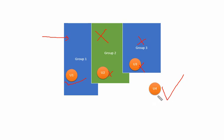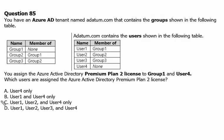User 4 has the license because it was assigned directly. So keep in mind: when we apply licenses to a group that has subgroups, the license will not be applicable to the subgroups or their members — only to direct members of that group. From this lab test we know that option B is correct: user 1 and user 4 only, because user 4 has a direct assignment and user 1 is a direct member of group 1.